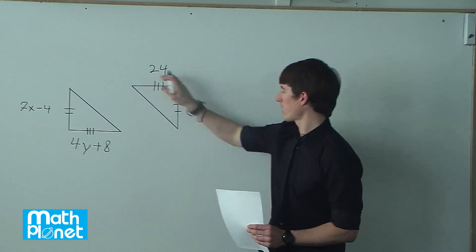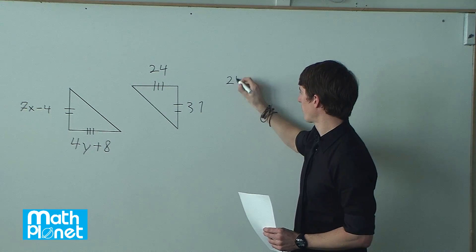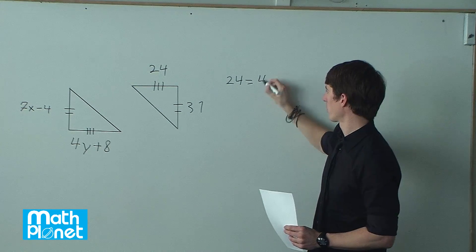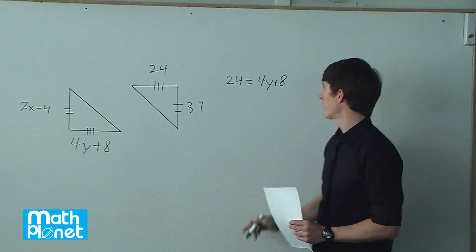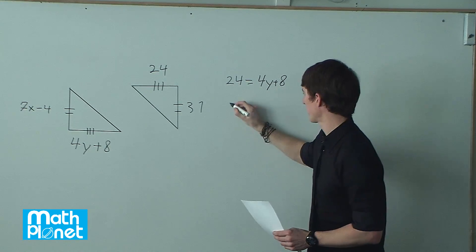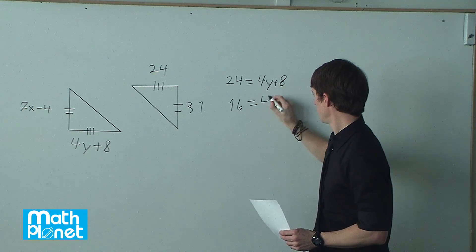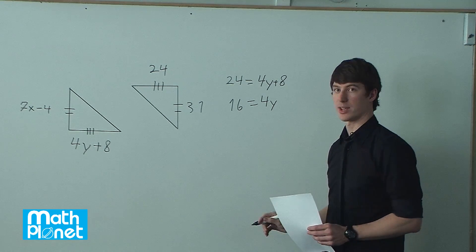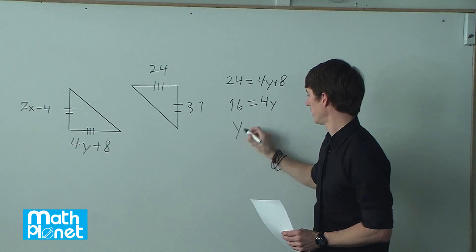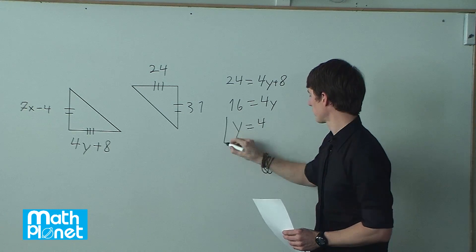So we see that these are the same, so we can say 24 equals 4y plus 8, and then we can solve for y. 24 minus 8 is 16, that equals 4y, and then we can divide by 4, so y equals 16 over 4, which is 4. So y equals 4, great.